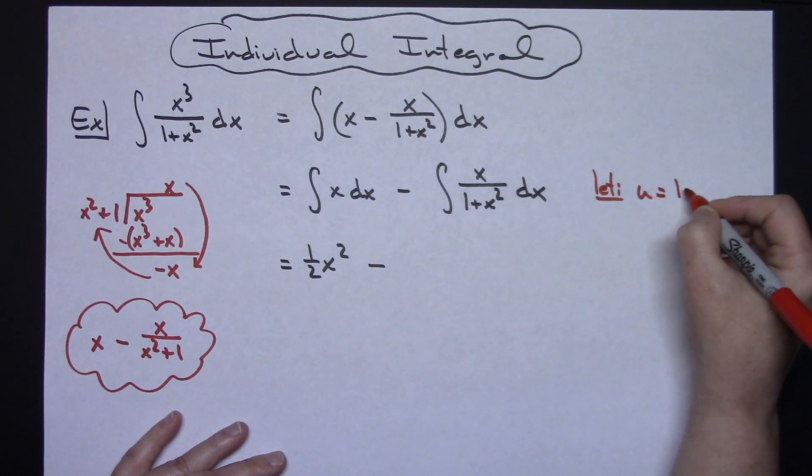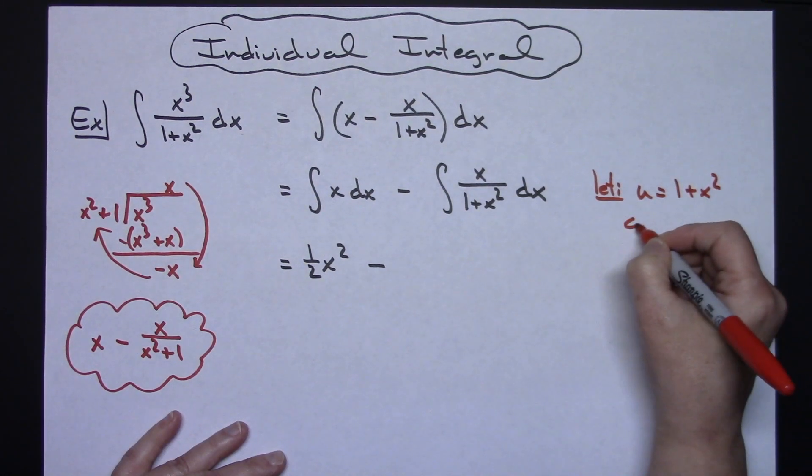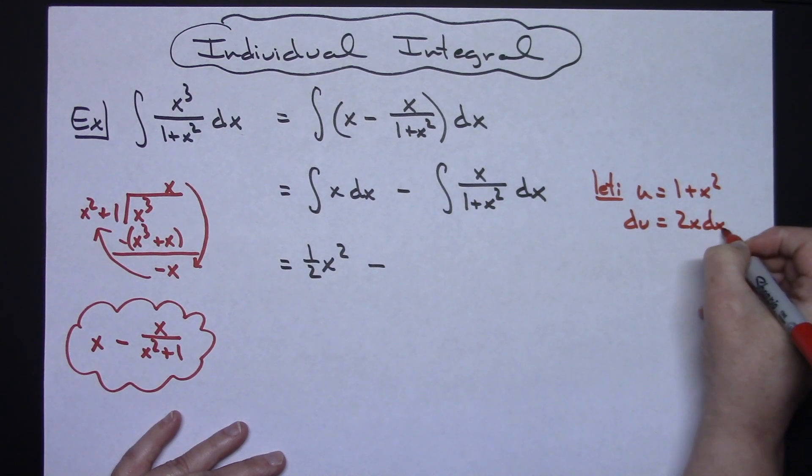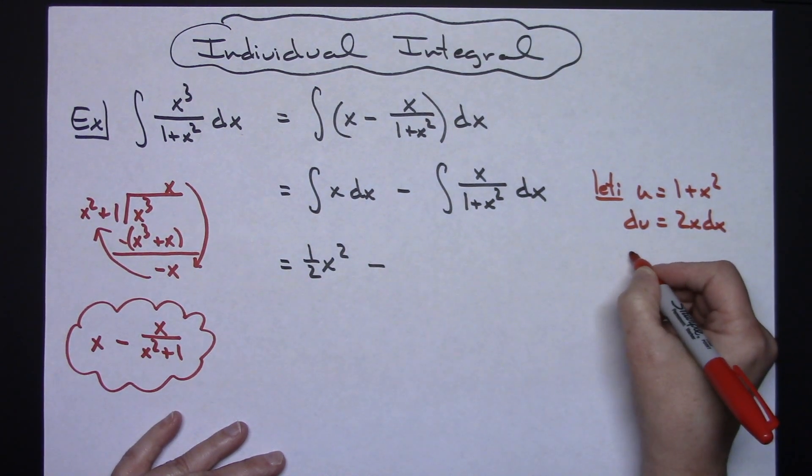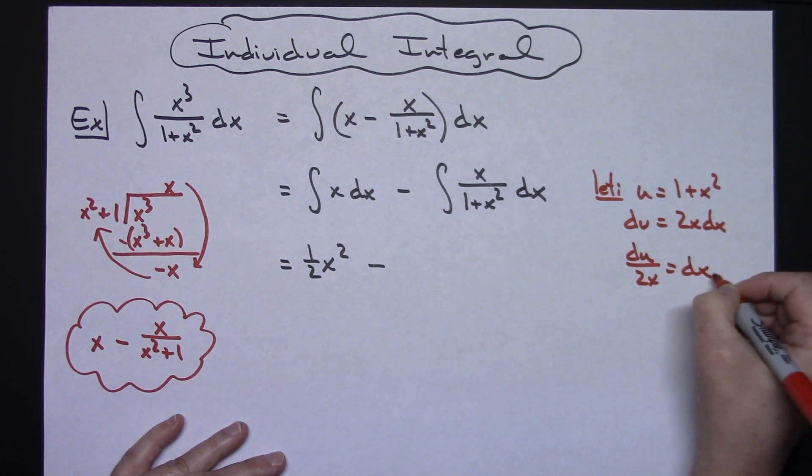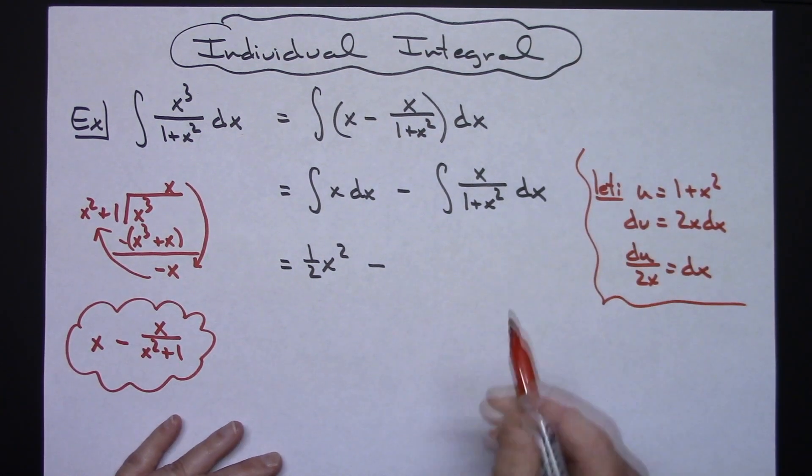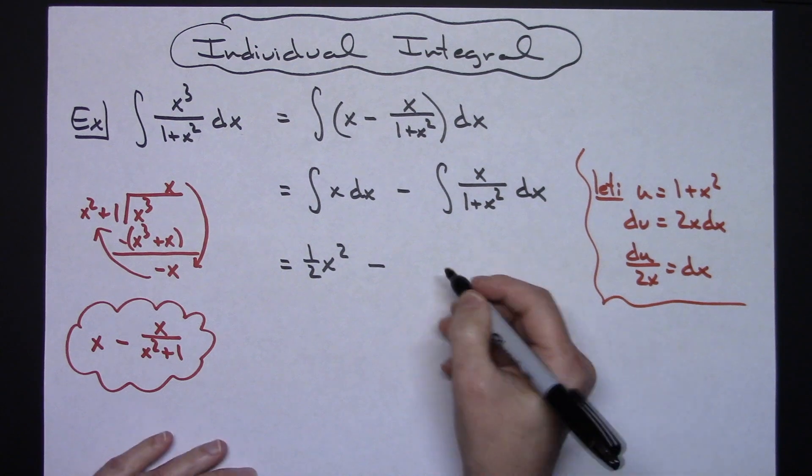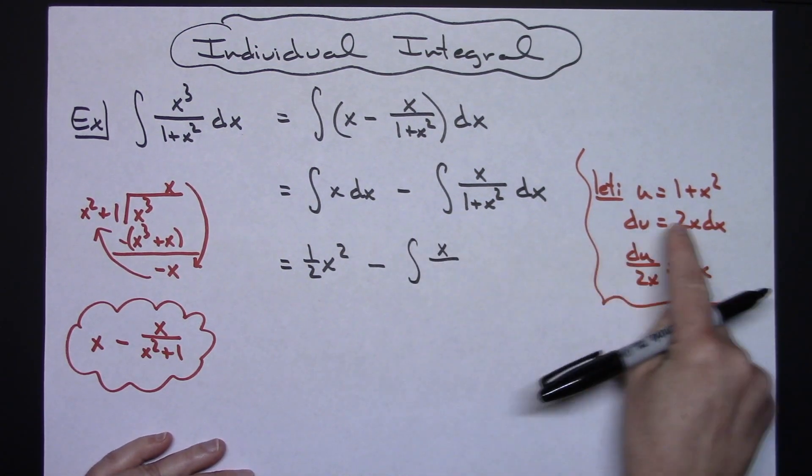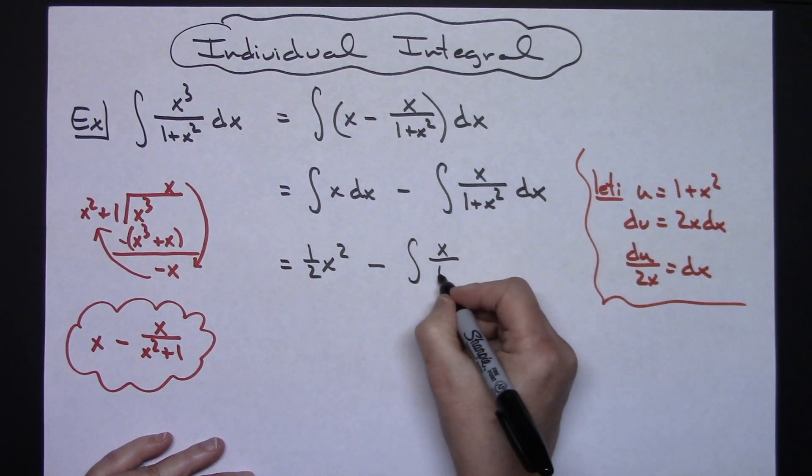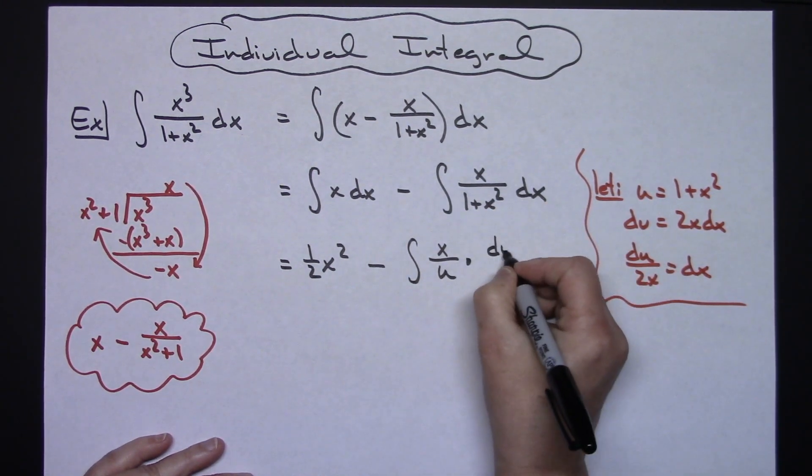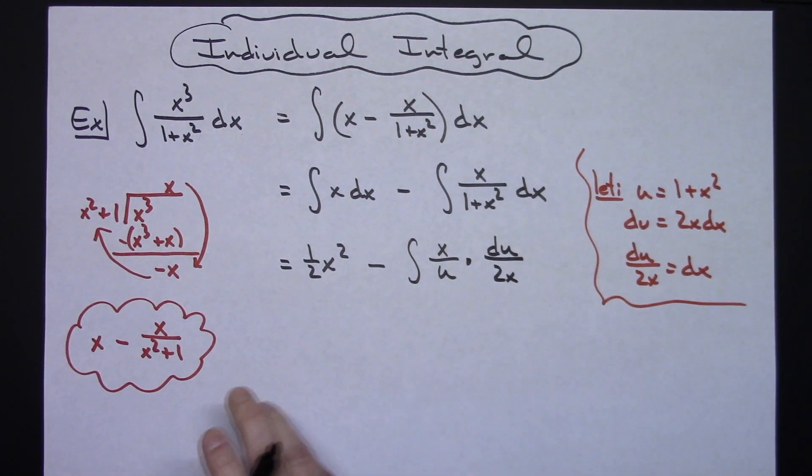On this one here it's a straightforward u substitution, so we'll go ahead and show those steps. We'll have our u equaling the 1 plus x squared. du then is going to be a 2x dx. And if we go ahead and solve all the way down for dx, we'll have a du over a 2x is equal to dx. Okay, we'll come back up here, rewrite this. So now we'll have the integral of—we'll have the x on top, we'll let u be in that denominator, and we'll replace the dx with a du over a 2x.